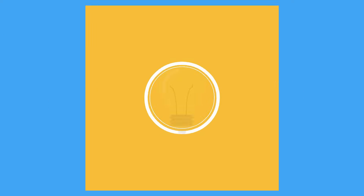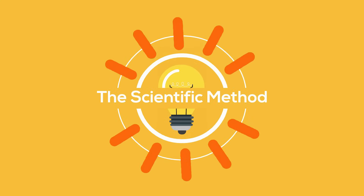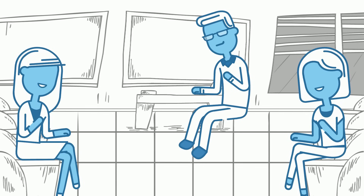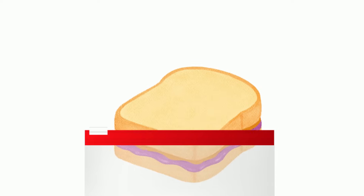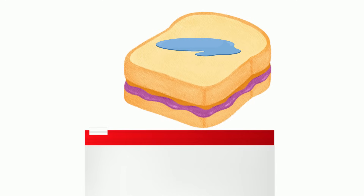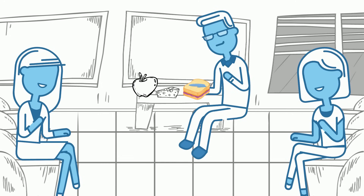You sit down next to your friend in the cafeteria to have yourself a sophisticated meal consisting of an apple, a slice of cheese, and a peanut butter and jelly sandwich. Upon taking your sandwich out of its bag, you observe that once again it is soggy. This is the third day in a row you have opened your bag to find a sad and soggy sandwich.